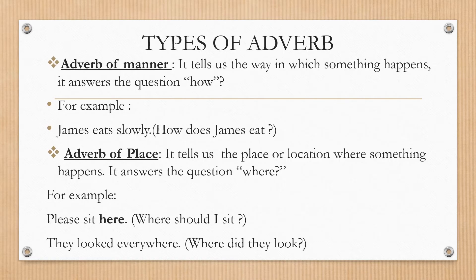Now there are types of adverb. We have adverb of manner. Adverb of manner tells us the way in which something happens. It answers the question how. For example, James eats slowly. So how does James eat? He eats slowly. You can also say James walks quickly. So how does James walk? He walks quickly. That's an example of adverb of manner.